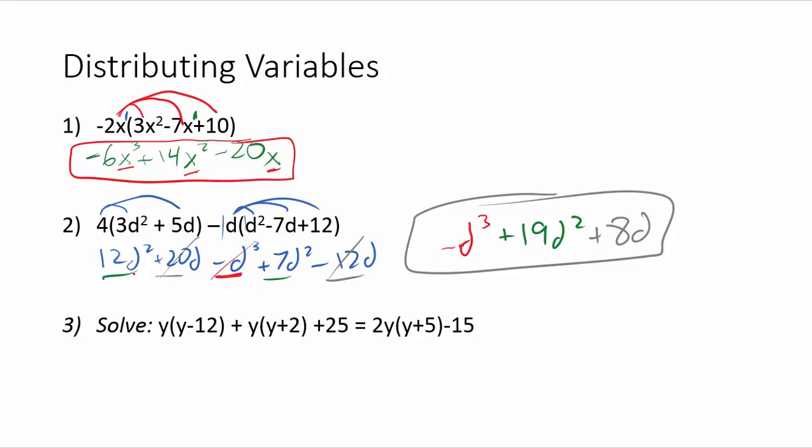Okay. Again another thing to be careful of here is when you're adding 12d squared and 7d squared it's not 19d to the fourth. Since we're adding and subtracting we don't change the exponent. We only do that when we're multiplying.